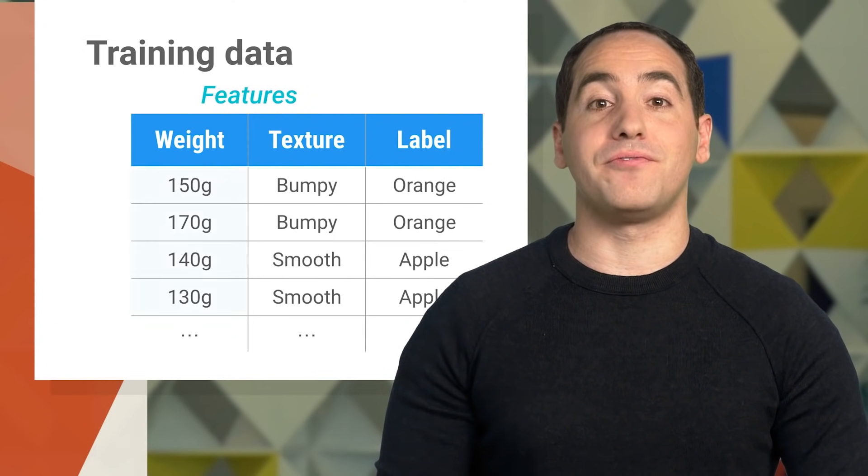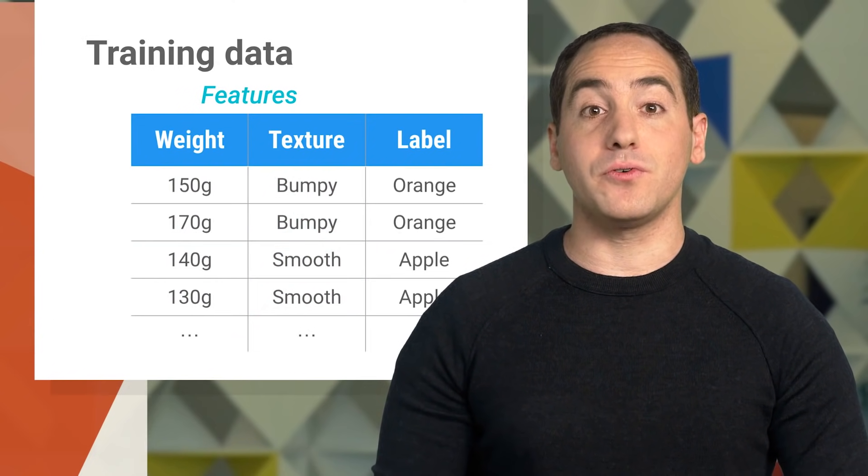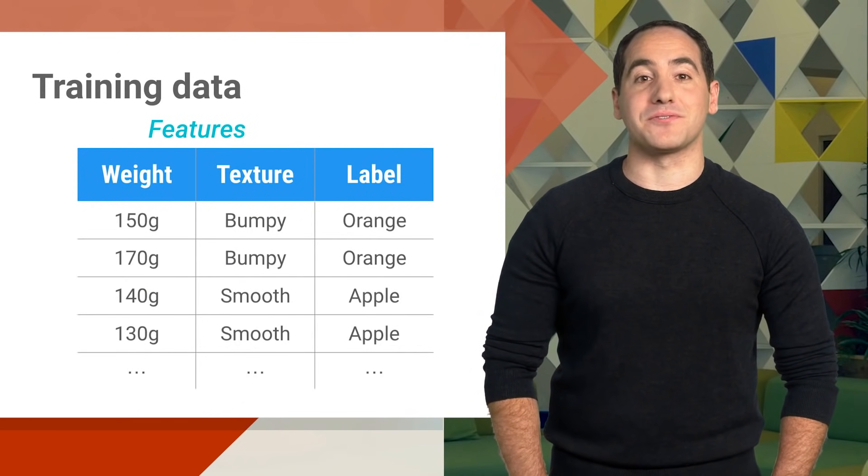In machine learning, these measurements are called features. To keep things simple, here we've used just two, how much each fruit weighs in grams, and its texture, which can be bumpy or smooth. A good feature makes it easy to discriminate between different types of fruit.